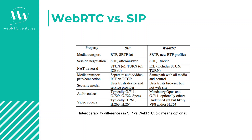Regarding codecs, there are slight differences, especially on audio. Both typically use G.711, but the preferred codec for WebRTC is Opus, while SIP will use G.711.